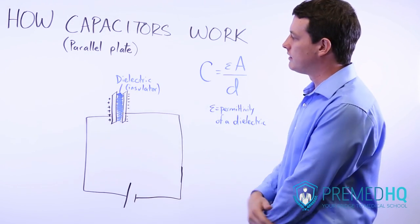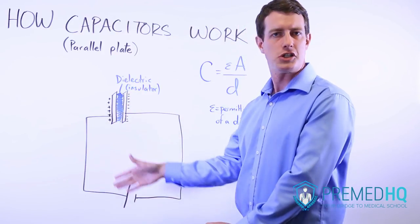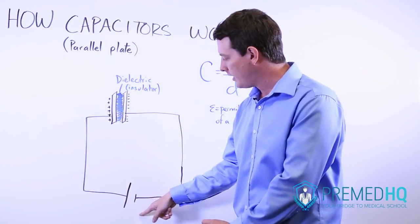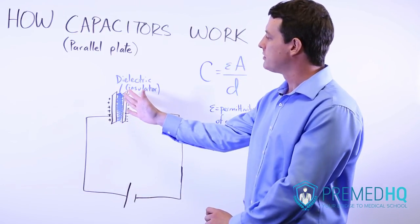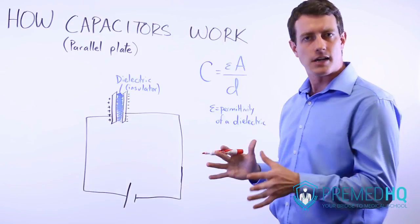It consists of two plates that are attached to some voltage generating source, usually a battery. And between those plates will usually be what's called a dielectric or an insulating substance.